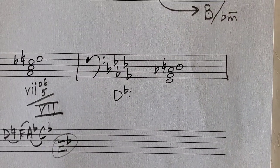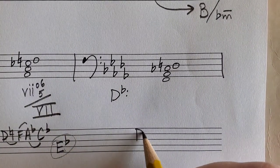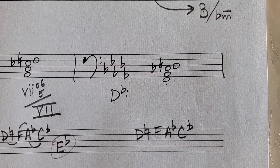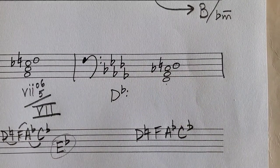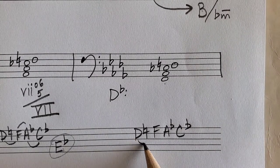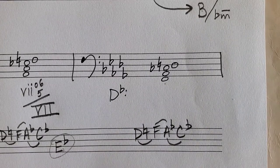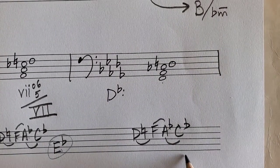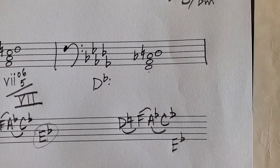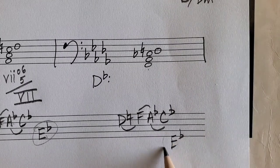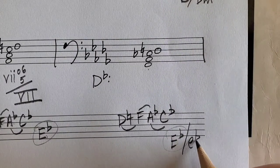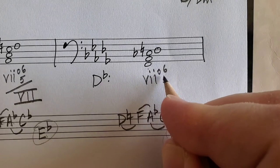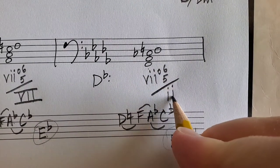Next in D-flat major, bass clef: D natural is the root, giving D natural, F, A-flat, C-flat. Notice D natural and C-flat are both outside the key signature. The chord is fully diminished — it's actually the same chord we spelled in the previous example but in a different context. D leads to E-flat. In D-flat major, E-flat is II — and II is minor in a major key. It's in 6/5 position: viio6/5/ii.